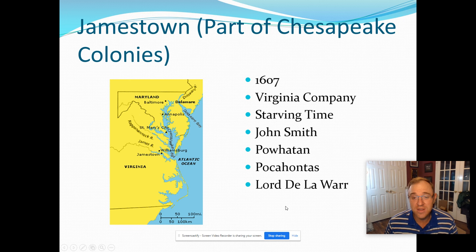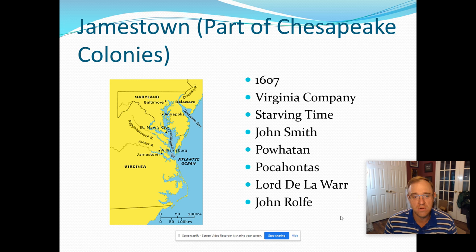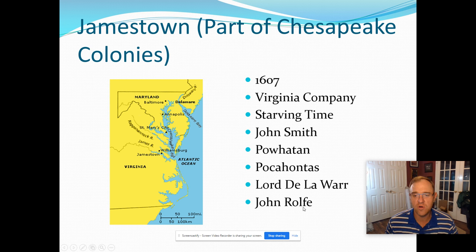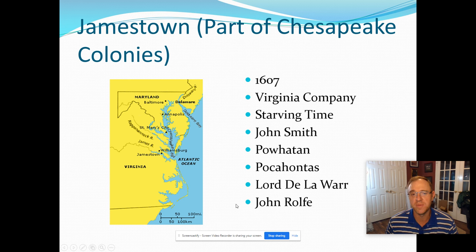There is a temporary peace through John Rolfe, who marries Pocahontas to end one of the wars. But John Rolfe is also notable because he's going to plant tobacco, and tobacco will be the livelihood of the Chesapeake for centuries. There are still a lot of tobacco plantations in that region today. So John Rolfe brings the money-making crop to the Chesapeake — everyone wanted tobacco back then. John Rolfe: tobacco. John Smith: whips them into shape, 'if you don't work, you don't eat.'